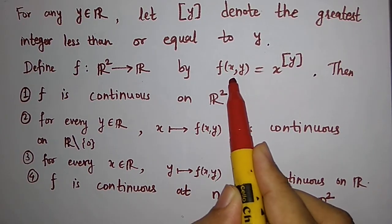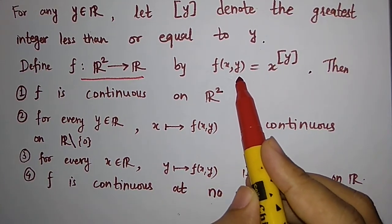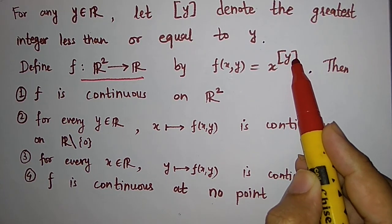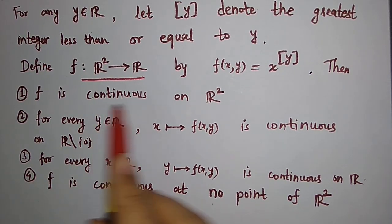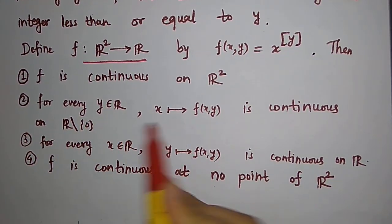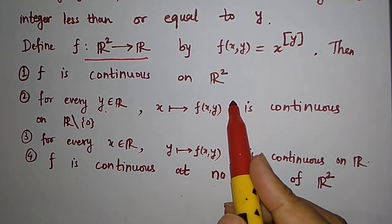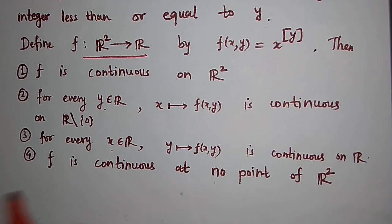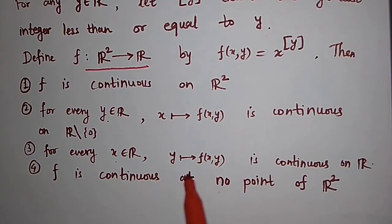We have given a function from R² to R which is defined by f(x,y) = x raised to the integer part of y, and we have been asked to find out whether the function is continuous or not. The second option was: if you restrict this function to real numbers fixing y, whether this function is continuous or not. Similarly, fixing x, whether this function is continuous or not. So let us find out what the correct options are.